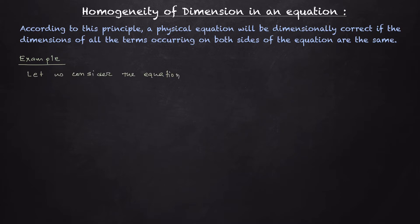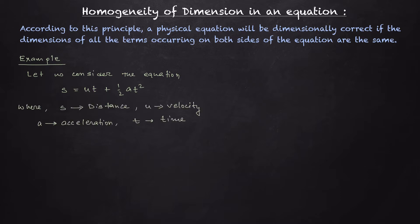Let us consider the equation s = ut + ½at². This is the kinematic equation we learn in the chapter 'Motion in One Dimension'. Here s is the distance, u is the velocity, a is the acceleration, and t is the time. We need to check whether each quantity on the left-hand side and right-hand side has the same dimension.